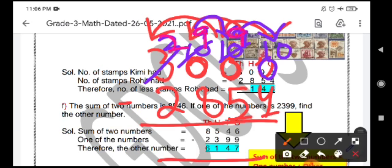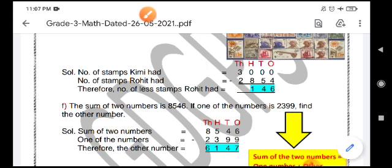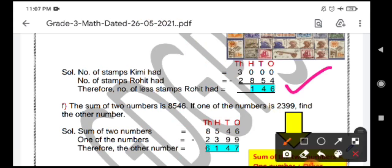2, 9, 9 and 10. See, 10 minus 4 is 6. 9 minus 5 is 4. 9 minus 8 is 1. 2 minus 2 is 0. So, 146 is the difference that we got. That is, less number of stamps Rohit had by this number, that is, 146.